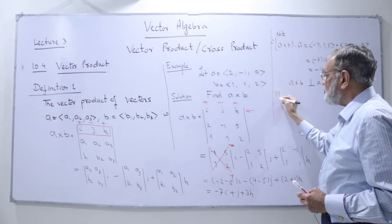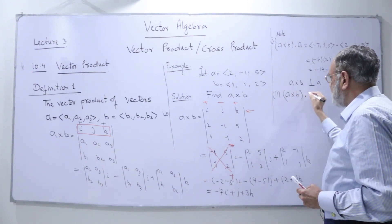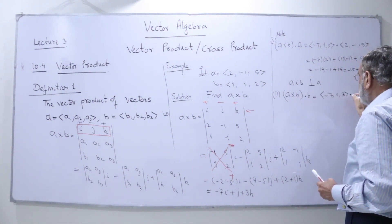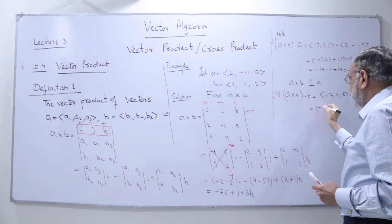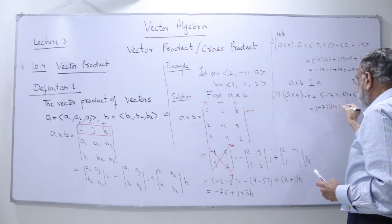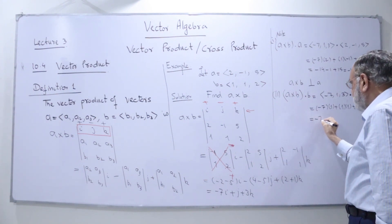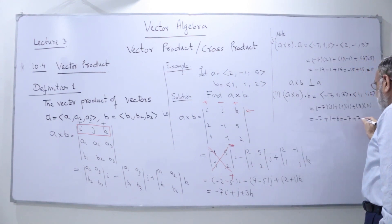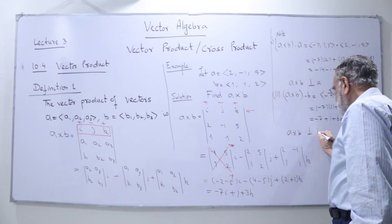Number 2: now I take the dot product of a cross b with b. My a cross b is (-7, 1, 3) and my b is (1, 1, 2). We take the dot product: (-7)(1) + (1)(1) + (3)(2) = -7 + 1 + 6 = -7 + 7 = 0. That gives me the conclusion that a cross b is orthogonal to b.